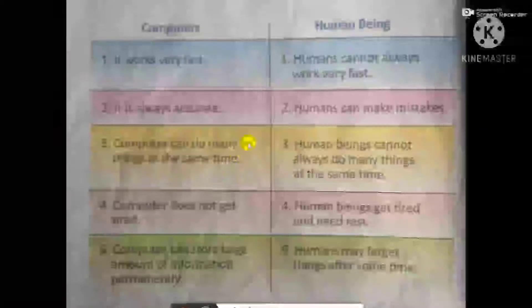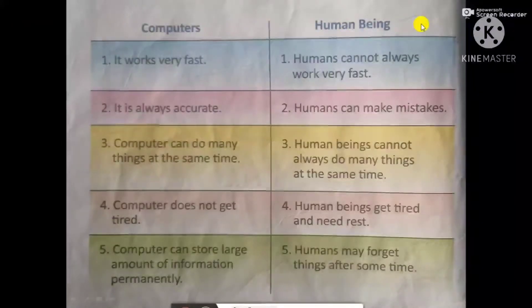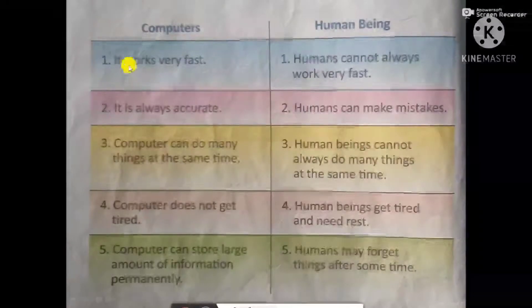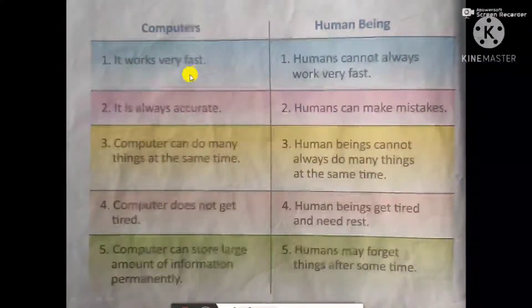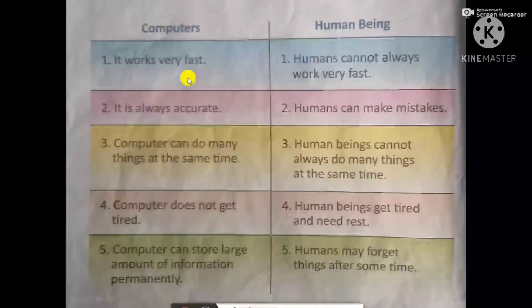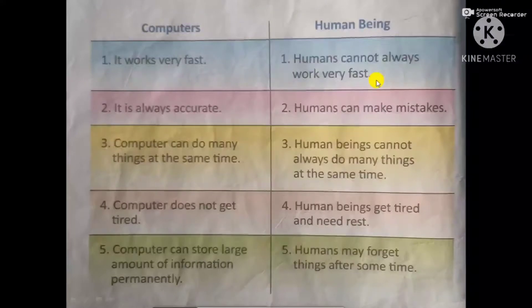Now let's see the difference between computers and human beings. First, computers work very fast. But humans cannot always work very fast.